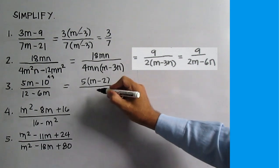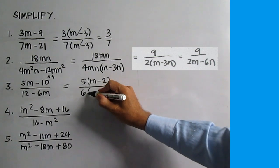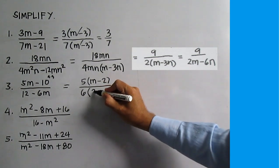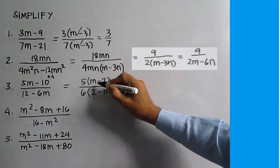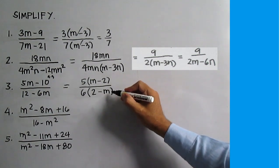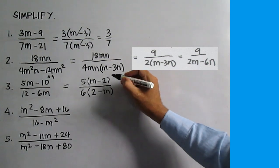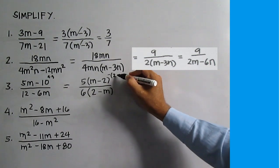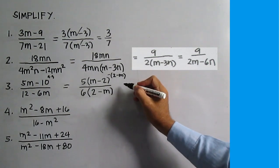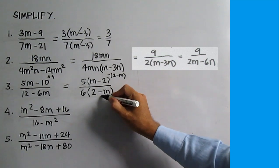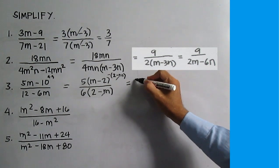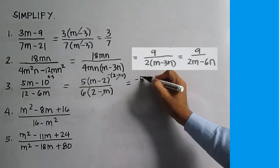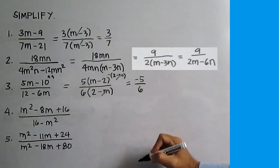Number 3 is equal to 5 times the quantity M minus 2. The denominator can be factored as 6 times the quantity 2 minus M. Note that we have M minus 2 and 2 minus M, but M minus 2 is just the opposite of 2 minus M. Divide out 2 minus M. This is equal to negative 5 over 6.